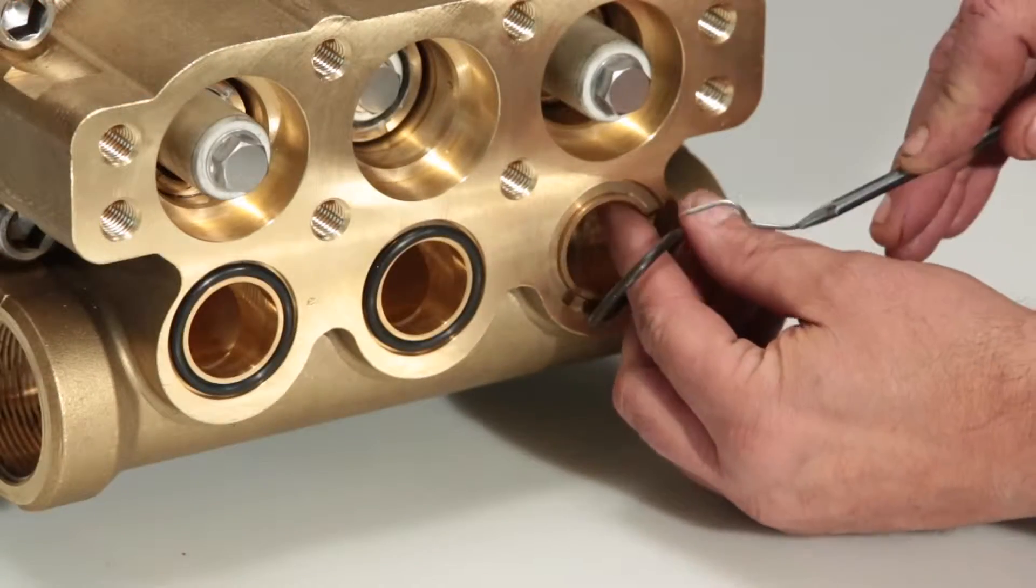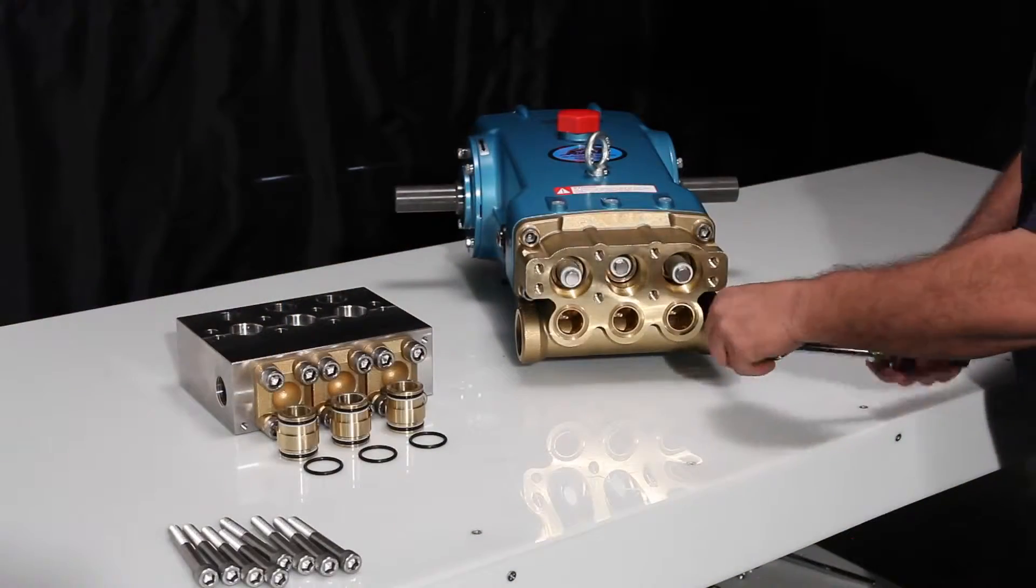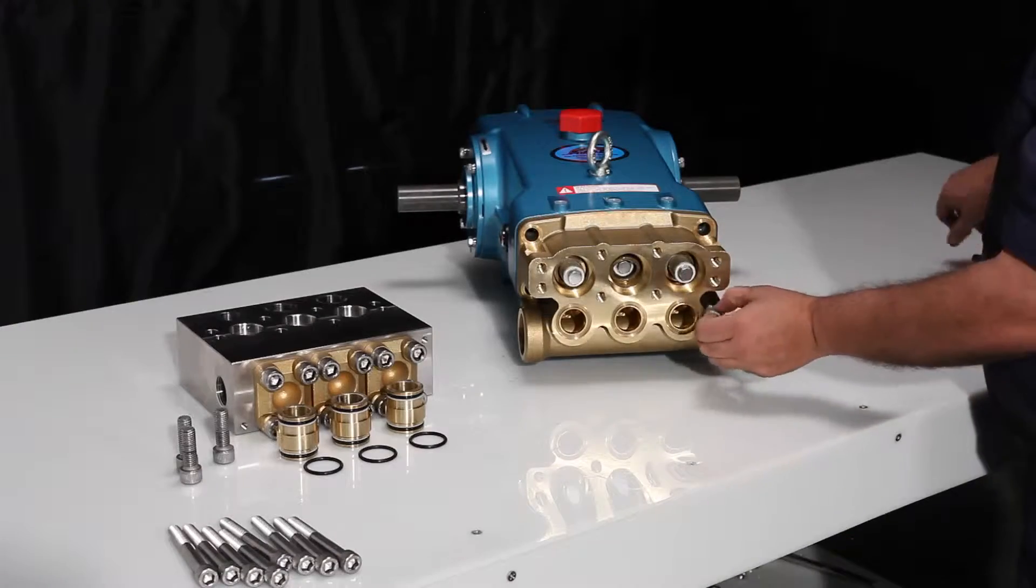Use a small pick to remove the inlet manifold o-rings. To remove the inlet manifold, start by removing the four inlet manifold bolts using a 12mm allen wrench.